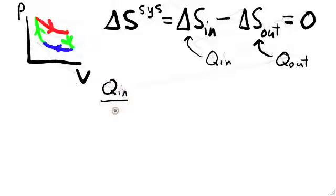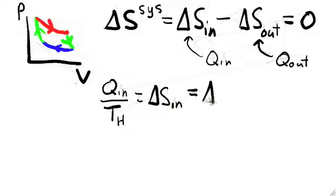All of the heat flow into the system occurs along the hot isotherm, so we can immediately write delta S in equals Q in divided by T hot. Since total entropy change equals zero, delta S in equals delta S out. And by similar logic as before, delta S out equals Q out divided by T cold.